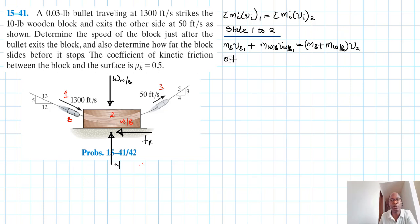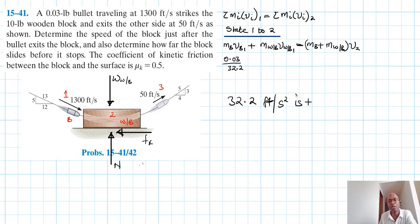The mass of the bullet is 0.03 divided by 32.2, where 32.2 ft/s² is the acceleration due to gravity.